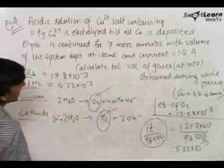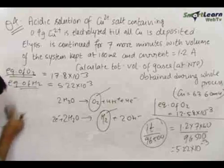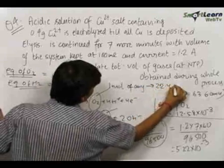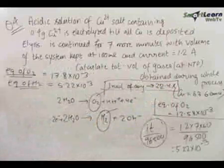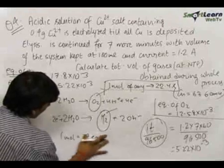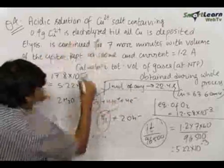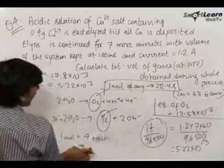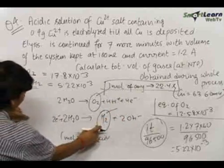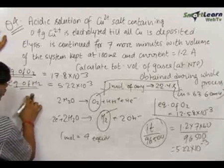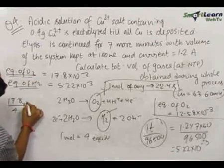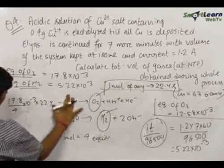We need to find the total volume of gases produced at NTP. At NTP, 1 mole of any gas occupies 22.4 liters. For oxygen, 1 mole equals 4 equivalents because the valency factor of oxygen is 4 — it was 4 in both reactions in the first electrolysis also. Therefore, 4 equivalents of O₂ at NTP occupy 22.4 liters. For hydrogen, the valency factor is 2, so 2 equivalents of H₂ occupy 22.4 liters.